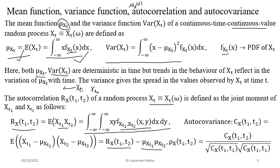The autocovariance equals the autocorrelation minus the product of mu_X(t1) and mu_X(t2). Using autocorrelation and autocovariance, we can also define the coefficient of correlation by dividing the autocovariance by the square root of the variance of X(t1) times the variance of X(t2). These are all important concepts for the centralized representation of a random process.